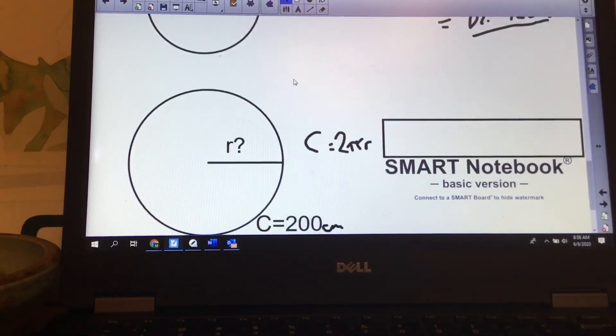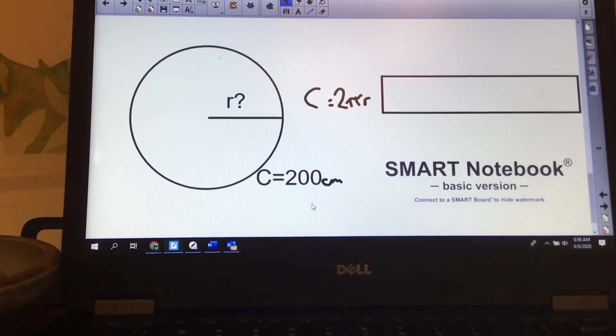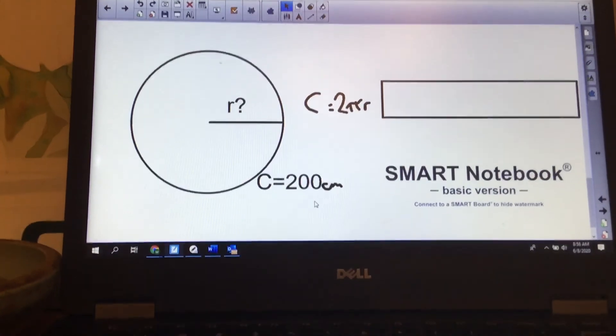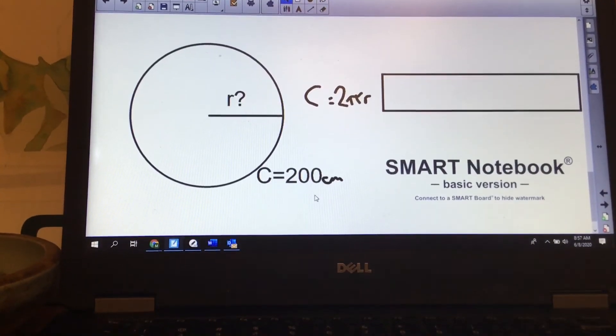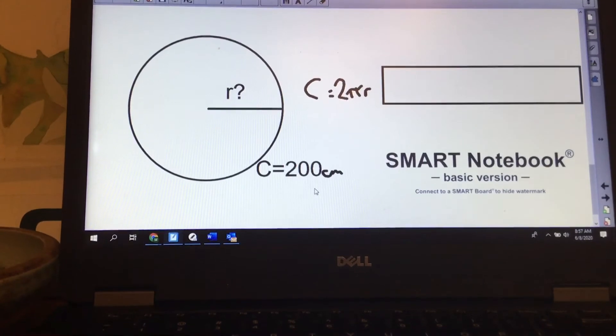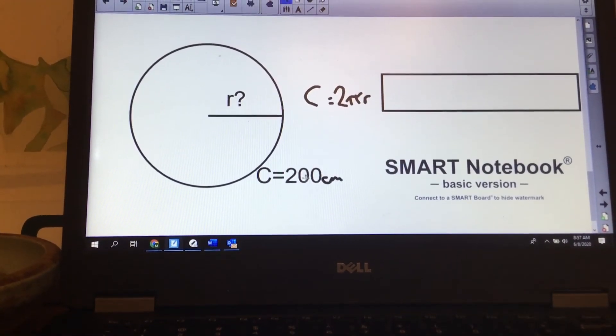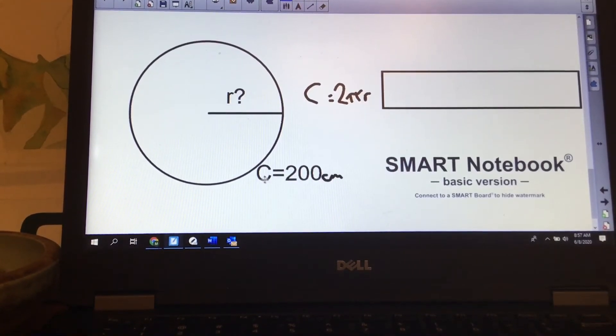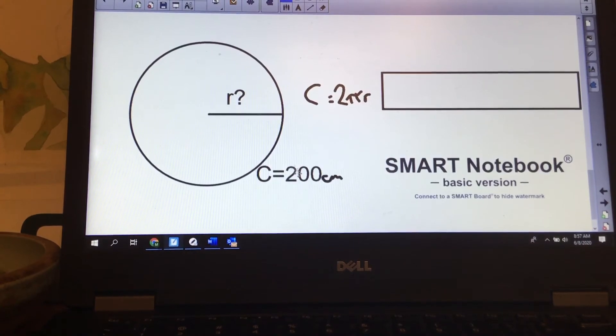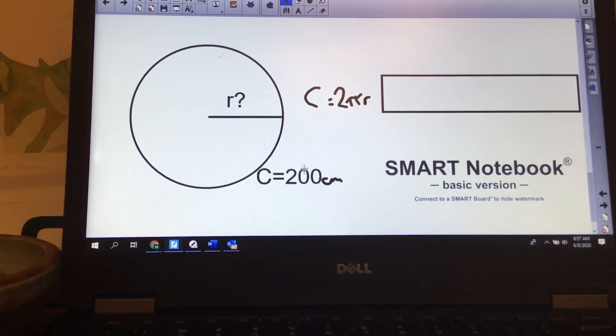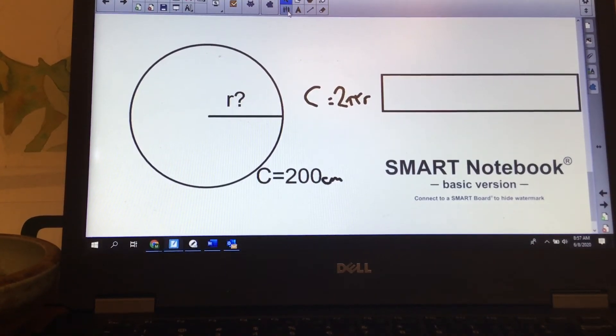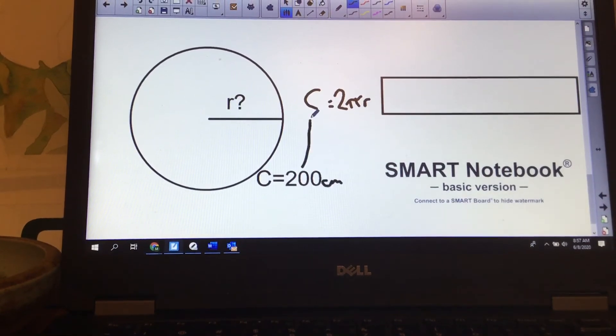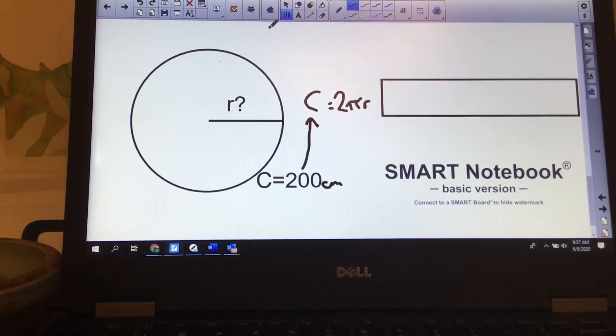The only other style of question you'll get is like a reverse calculation. This would be easier now than it was in term one because we've done algebra. Figuring out that if my circumference is 200 and I don't know my radius, I know that I can actually plug my 200 in right here, like 200 equals 2 times pi times radius.